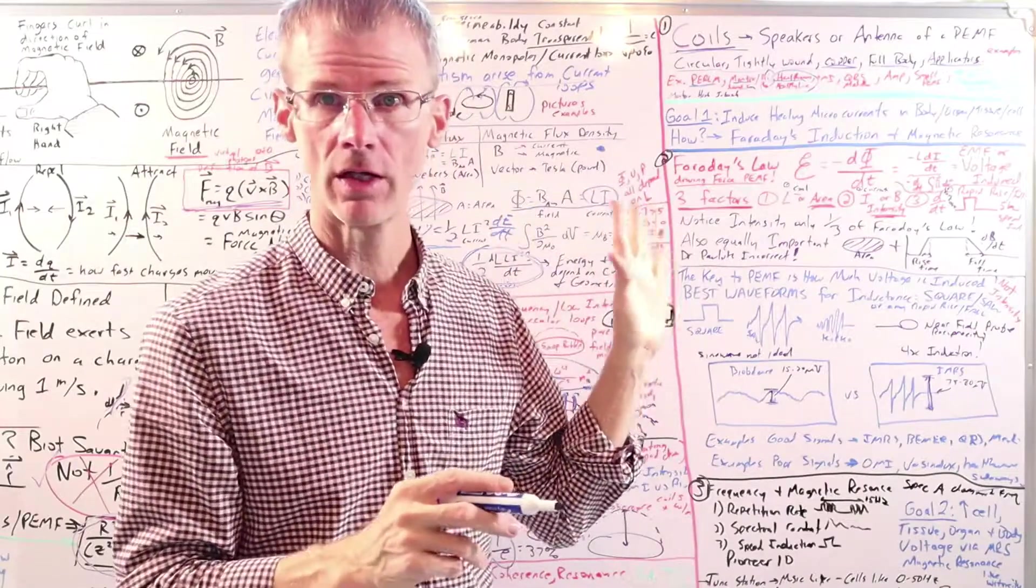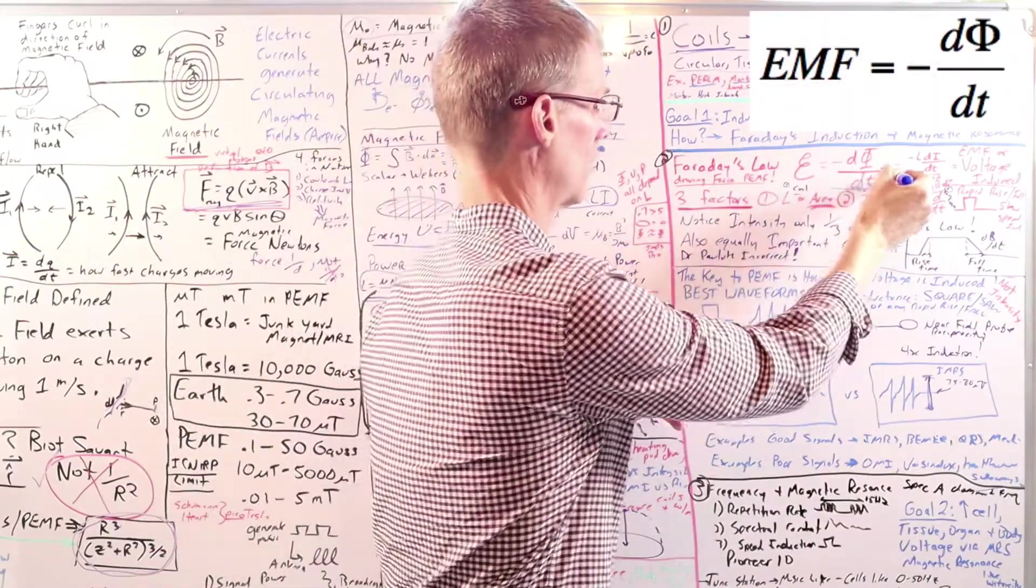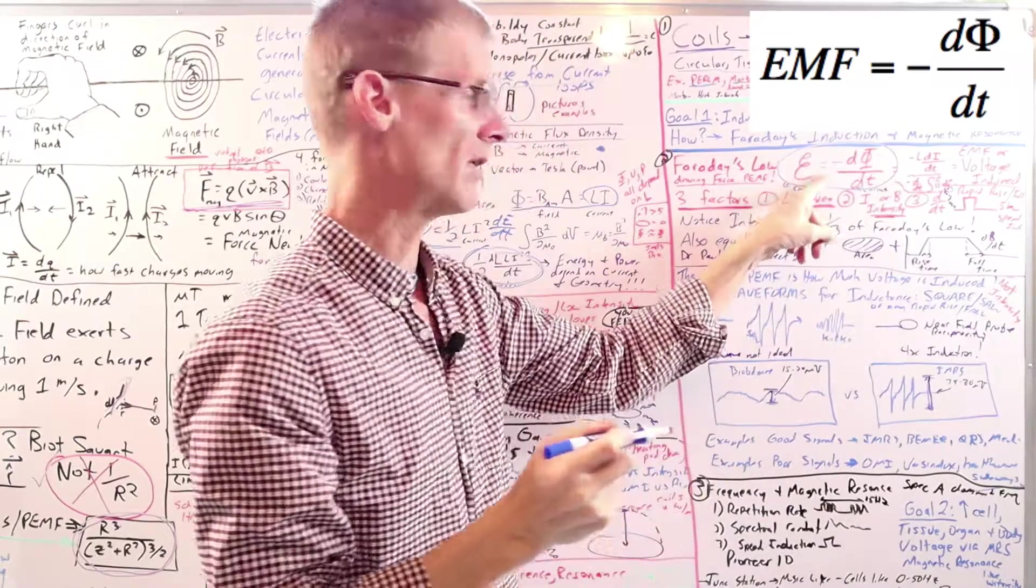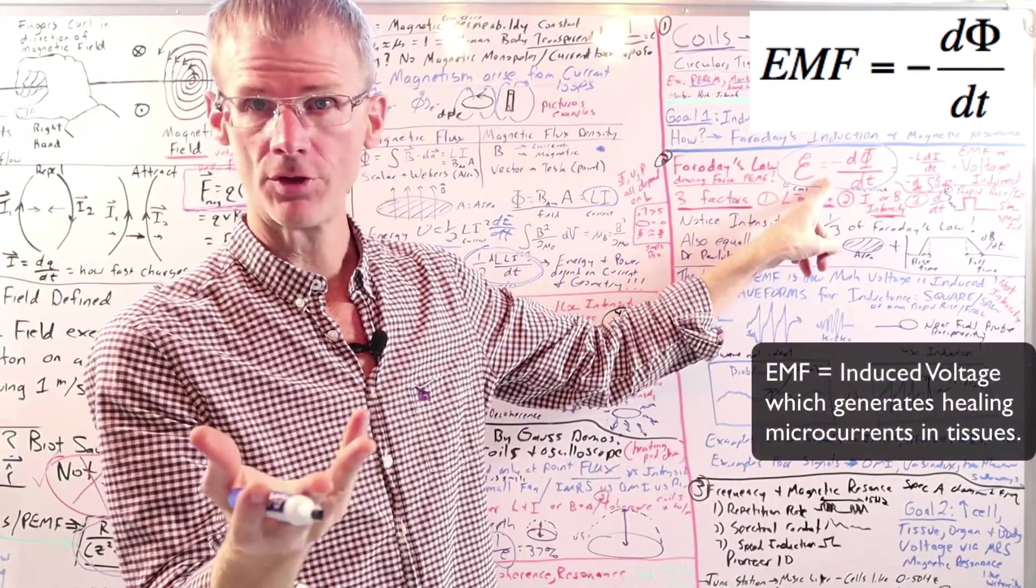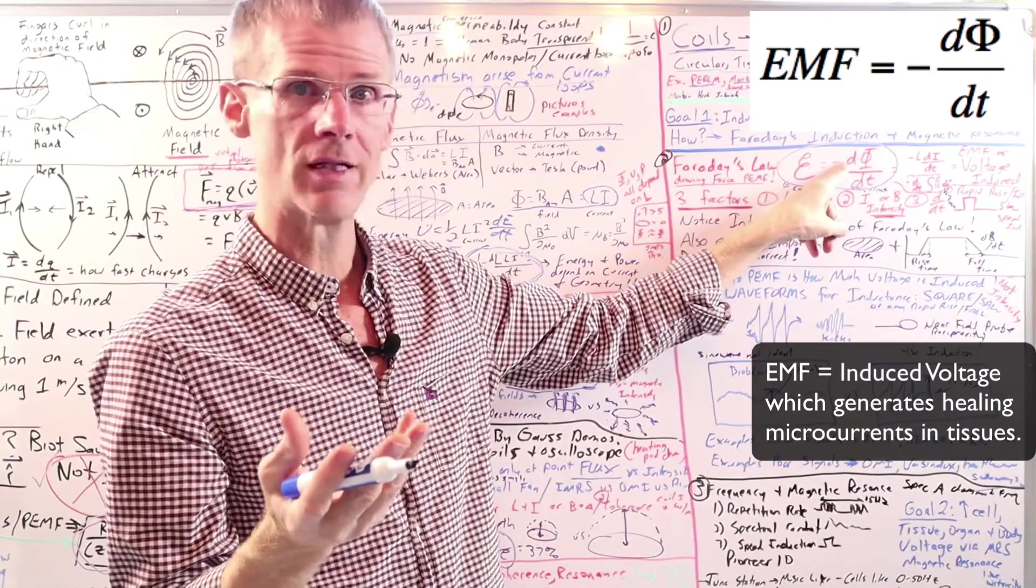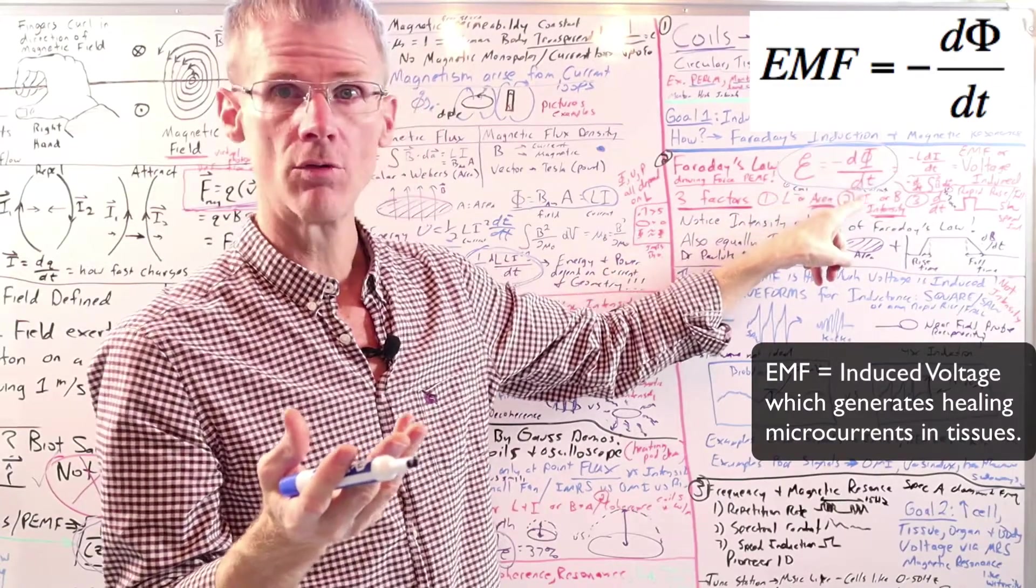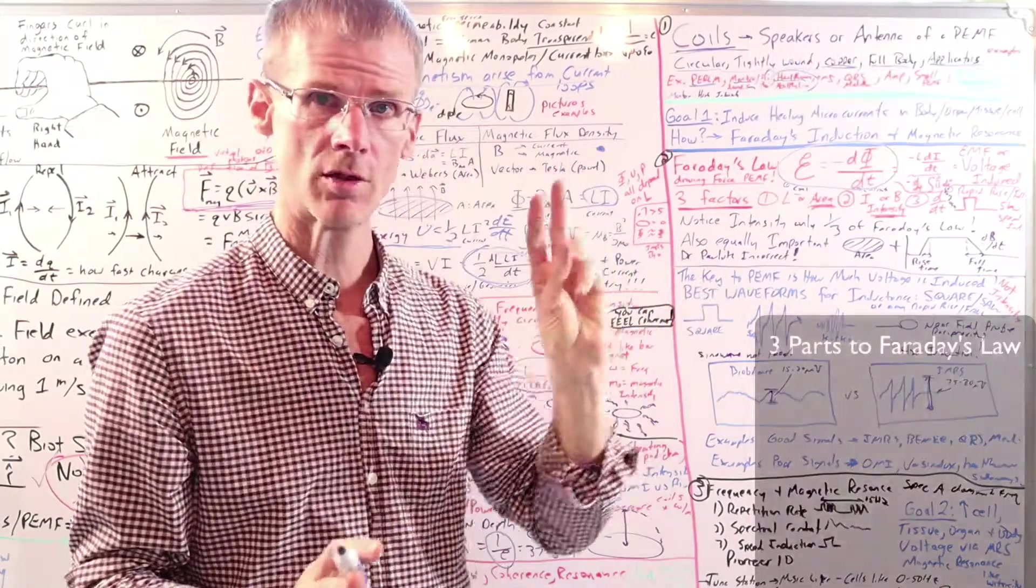And here's the wonderful equation here. And this basically says that the EMF, which is the voltage that's induced, is equal to the minus, that's from Lenz's Law, change of flux over time. But just know that there's three components to it.